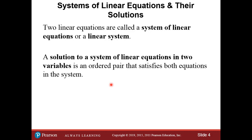Two linear equations together are called a system of linear equations, or simply a linear system. A solution to a system of linear equations in two variables — so we're talking about x and y, two equations with two unknowns — is an ordered pair that satisfies both equations. We talked about what a solution of one equation means, and now an ordered pair that satisfies both equations in a system is a solution of the system.